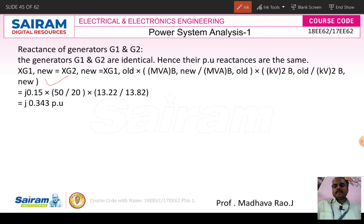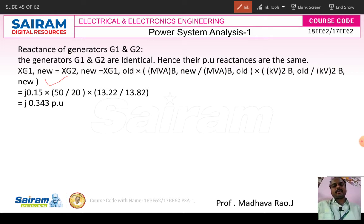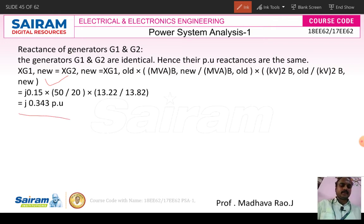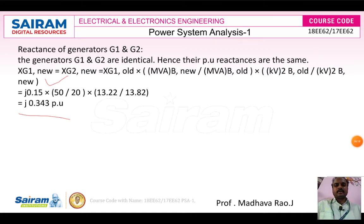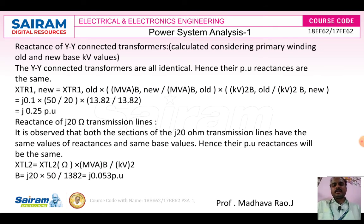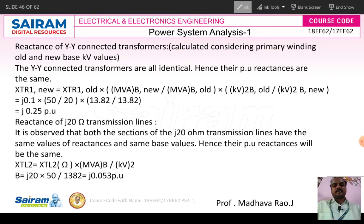Using this formula, we substitute the old reactance value, MVA_base_new, MVA_base_old, kV²_base_old, and kV²_base_new. Finally, we get j0.043 per unit for the reactance of generator 1 and generator 2.